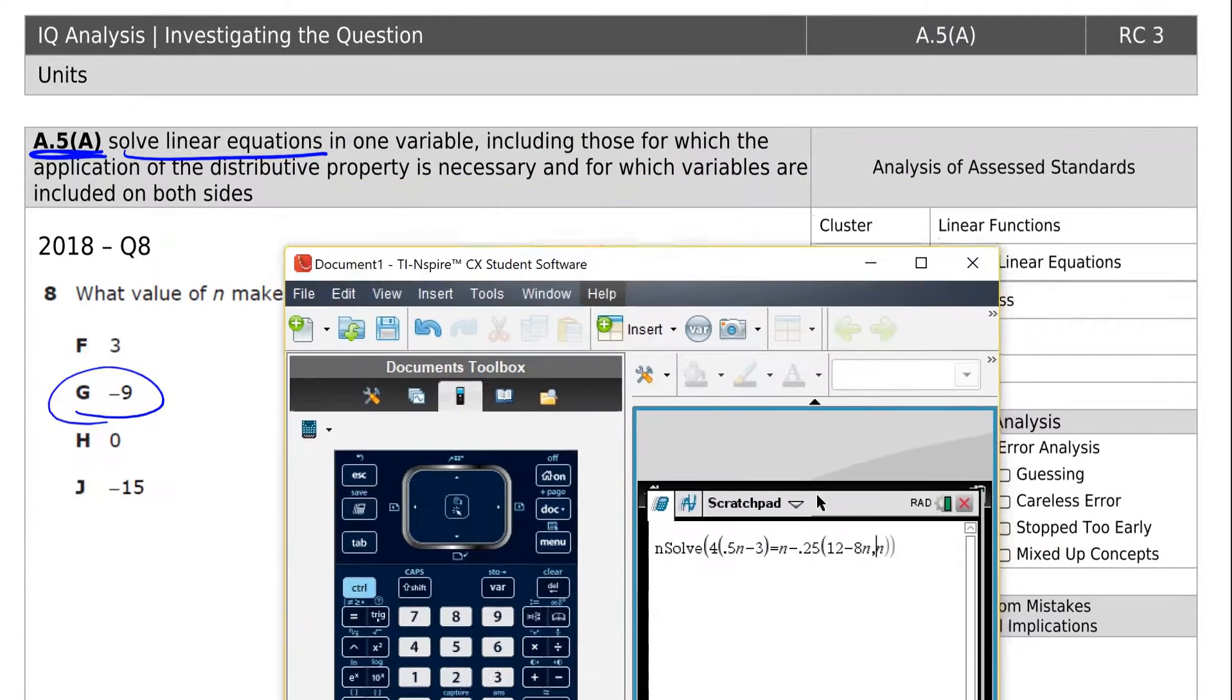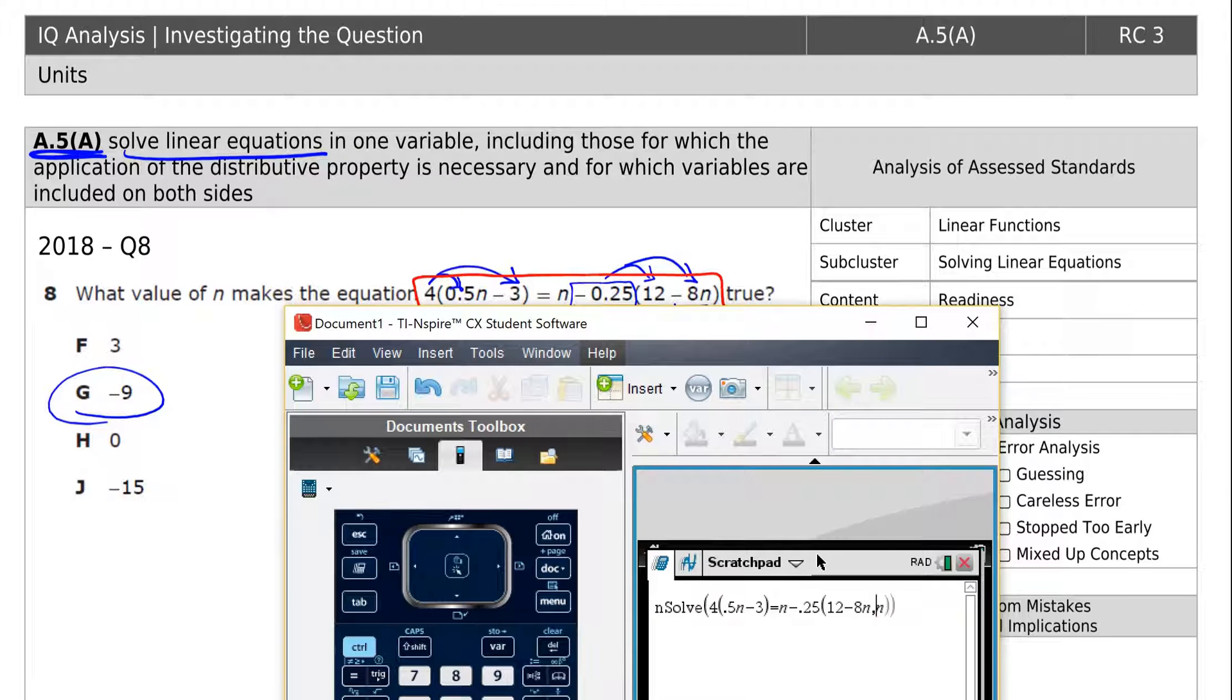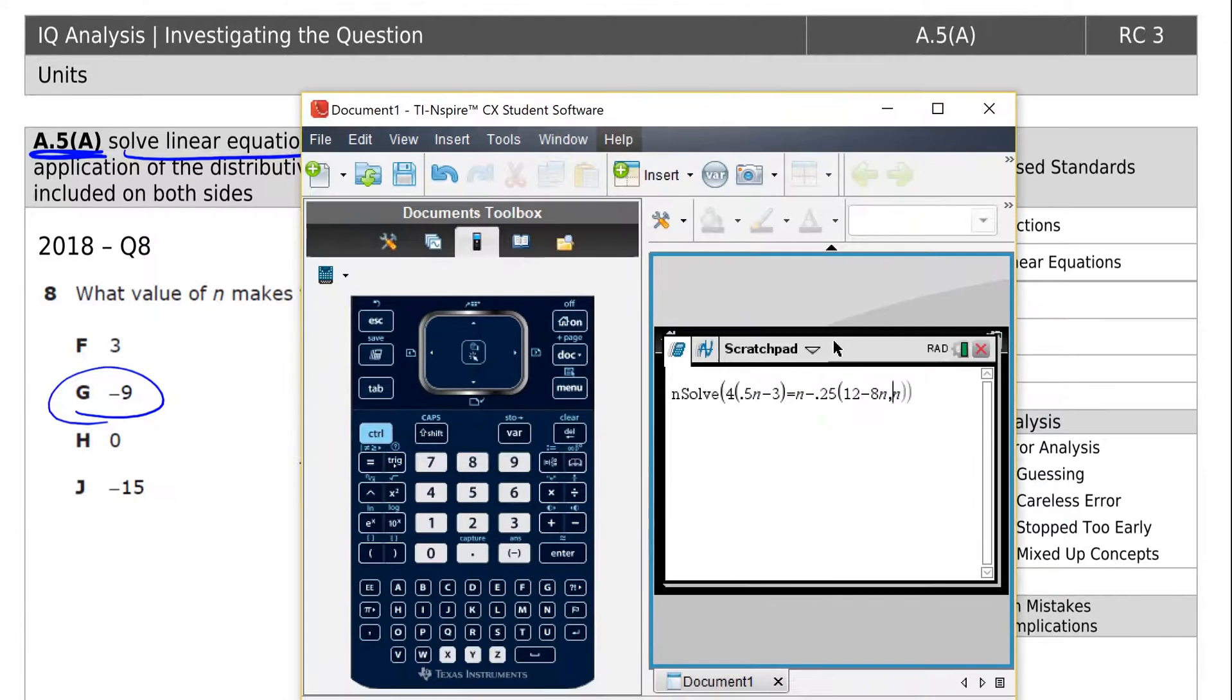Don't delete those parentheses. Those are supposed to be there. But in this one, if we look at the original one, it's 12 minus 8n, parentheses. 12 minus 8n, we don't have that parentheses. That parentheses is over here, so we put the comma n inside the parentheses.